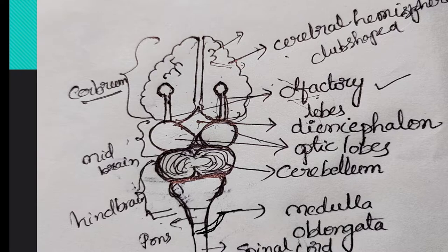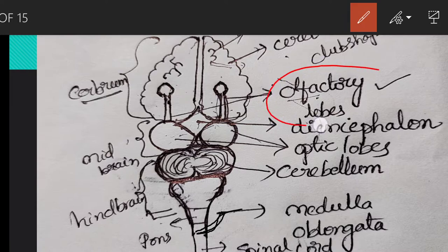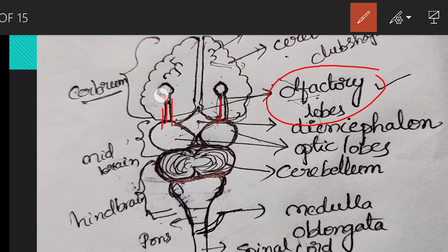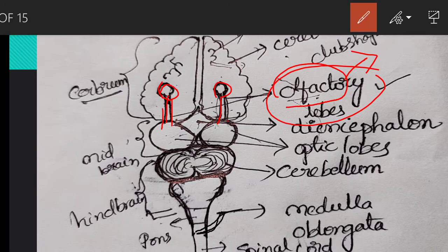The largest part in the brain is the cerebrum. Cerebrum has three parts. One is the olfactory lobes, which are club-shaped bodies visible from the ventral surface of the brain only. Club-shaped means cylindrical with one end enlarged. Olfactory lobes play a major role in the sense of smell — that means olfactory lobes are the centers for the sense of smell.